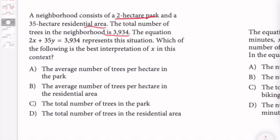The equation 2x plus 35y equals 3,934 represents the situation. Which of the following is the best interpretation of x? So we know that this equals the total number of trees in the neighborhood, right?